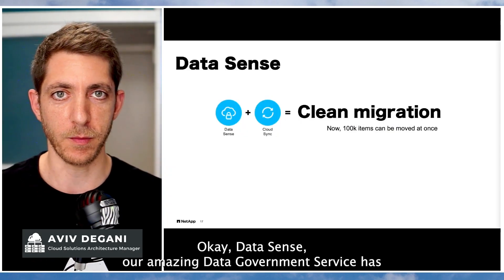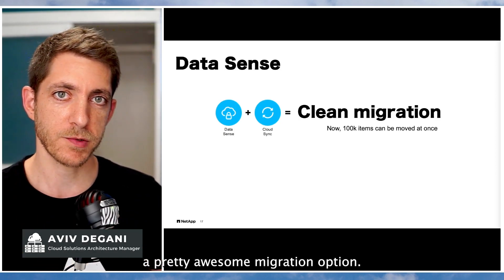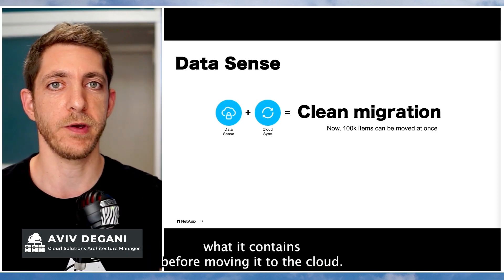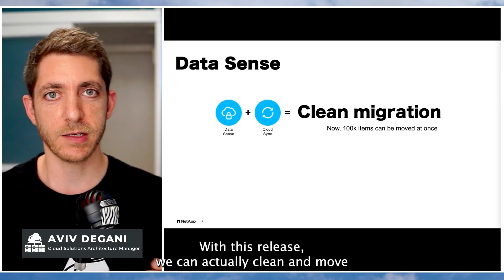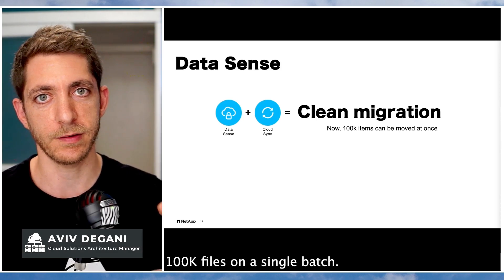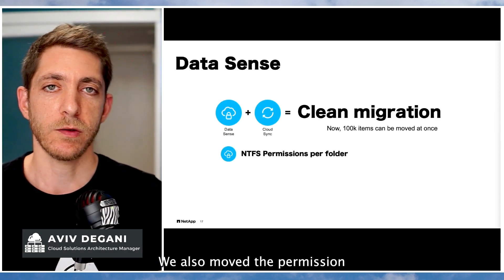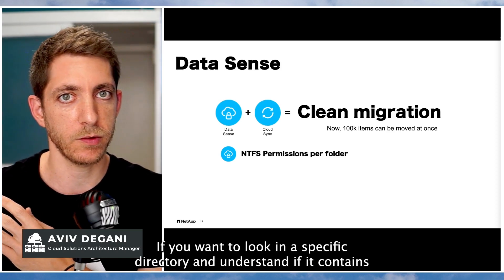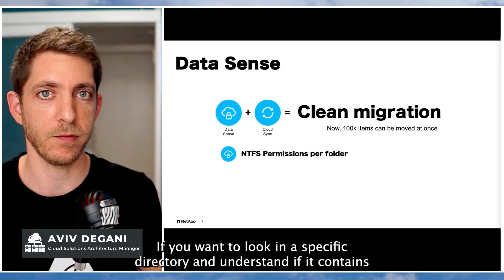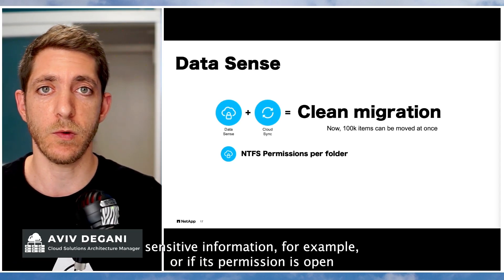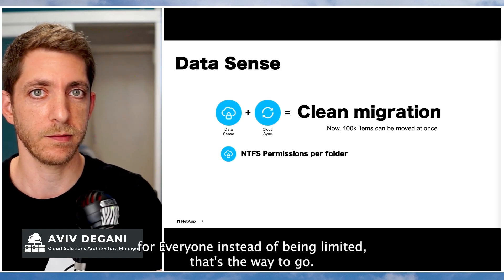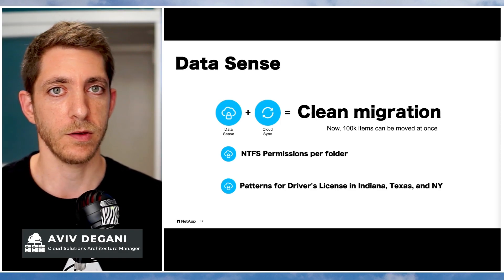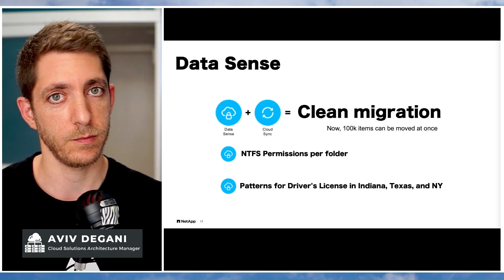DataSense, our data governance service, has a pretty awesome migration option — it can clean your data and give you full visibility into what it contains before moving it to the cloud. With this release we can clean and move 100,000 files in a batch. We also expanded the permission layer from just files to files and directories, so you can look at a specific directory and understand if it contains sensitive information or if its permissions are open to everyone. If you live in Indiana, Texas, or New York, you can now find driver's licenses in your data if they exist there — DataSense will find them.